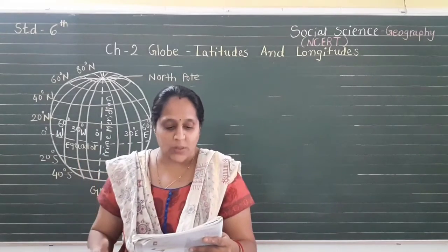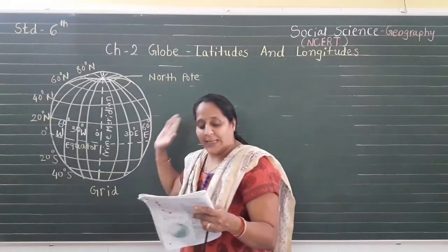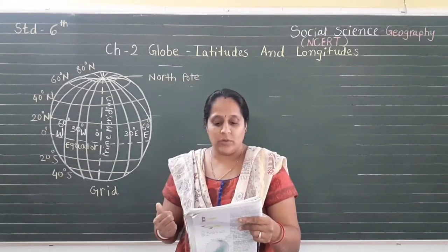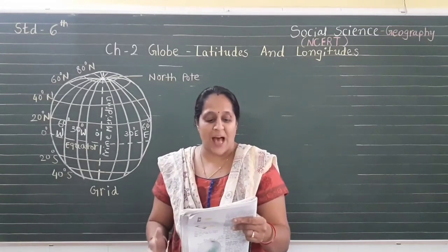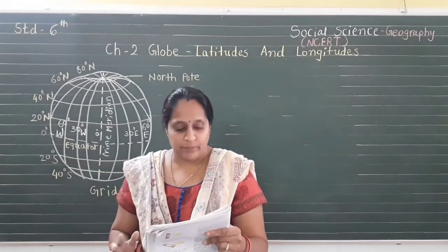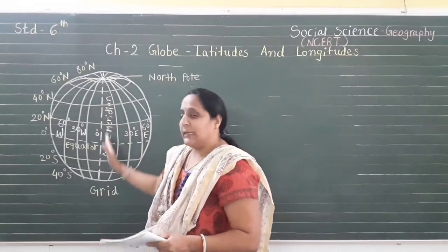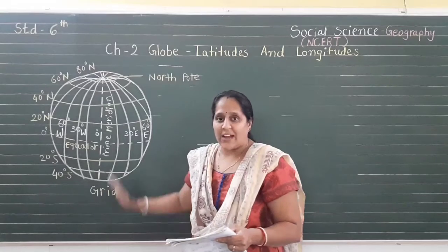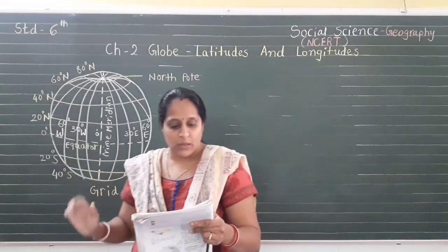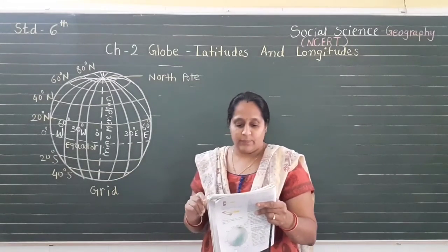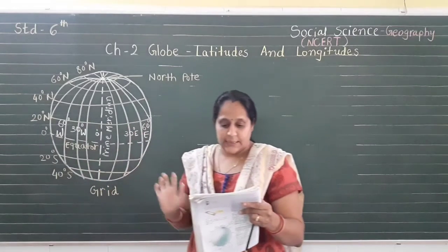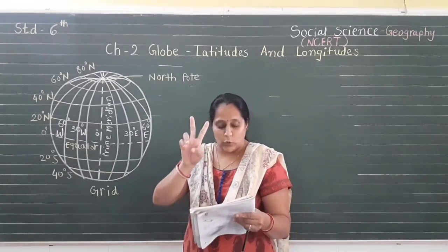Unlike parallels of latitude, all meridians are equal in length. Because it was difficult to number the meridians, all countries decided that the count should begin from the meridian which passes through Greenwich, where the British Royal Observatory is located. This meridian is called the prime meridian. Its value is zero degrees longitude, and from it we count 180 degrees eastward and 180 degrees westward. The prime meridian and the 180th meridian divide the earth into two equal halves: the eastern hemisphere and the western hemisphere.